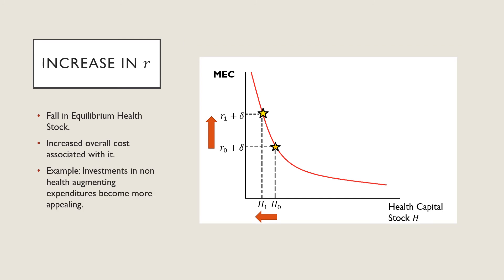Likewise, we're going to see the same type of motion with regards to an increase in our rate of return on our market. We're going to see a movement along the curve in the left direction, reducing our health capital stock with an associated higher price with it. An example of this is that we see investments in non-health augmenting expenditures becoming more appealing to consumers. So they're not going to be putting their cash in investment for health capital and health related goods and services.